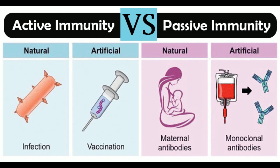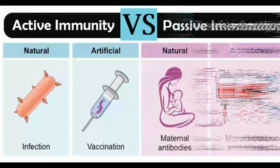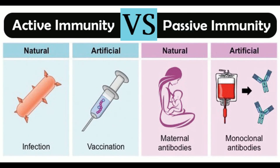Difference 19 — Examples: Active immunity natural example — producing antibodies in response to exposure to a pathogenic infection such as measles or a cold. Active immunity artificial example — producing antibodies in response to controlled exposure to an attenuated pathogen, e.g., vaccination. Passive immunity natural example — receiving antibodies from another organism, e.g., the fetus receiving antibodies via the colostrum. Passive immunity artificial example — receiving manufactured antibodies via external delivery, e.g., blood transfusions or monoclonal antibodies.